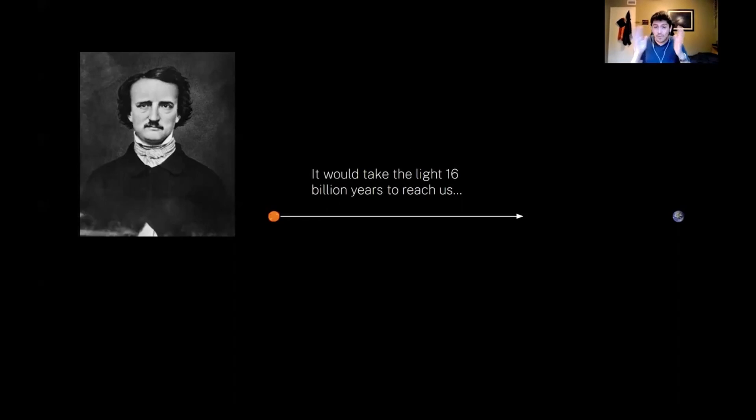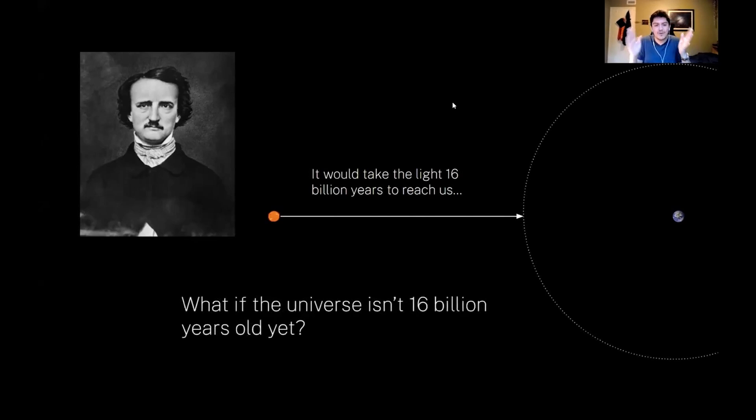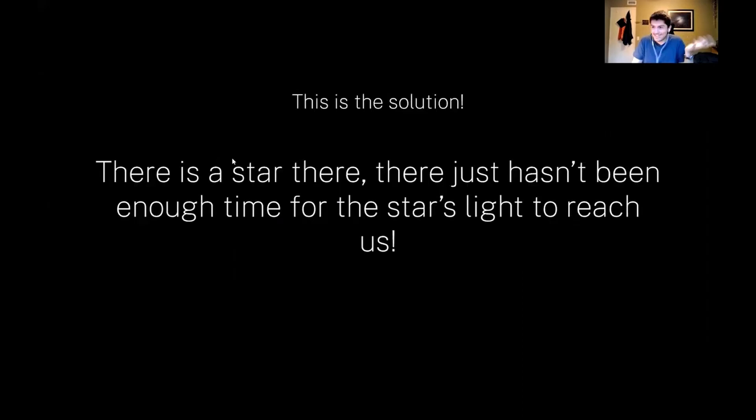And what Poe realized, of all people, what Poe realized: what if the universe isn't 16 billion years old yet? Meaning it would take the light so long to reach us, that the universe isn't even old enough for the light to have reached us here. And it turns out, this is the solution. This is exactly what happens.